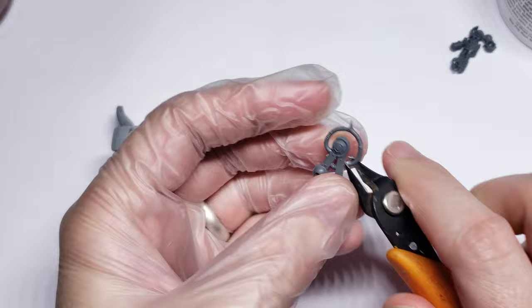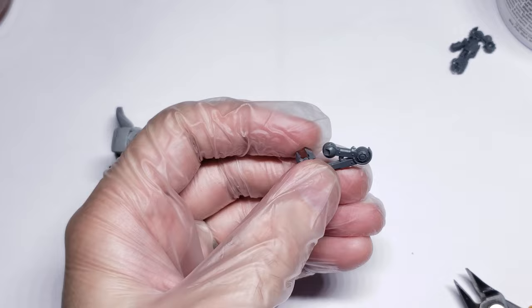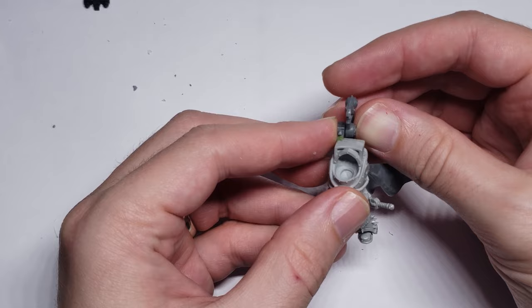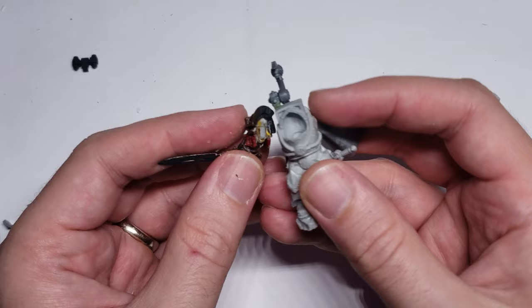Because this servo arm I'm using fits so well into the bracket I created, all I really had to do here was snip off these cables, as they were dangling the wrong way from my conversion, and glued the servo arm into the ball socket to finish off this part of the conversion.